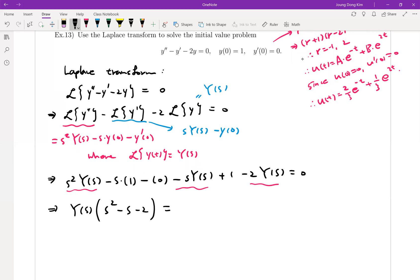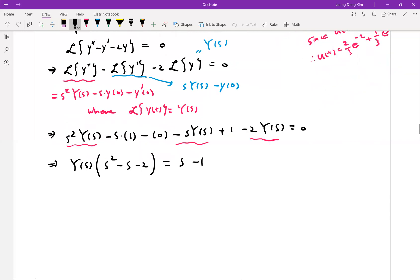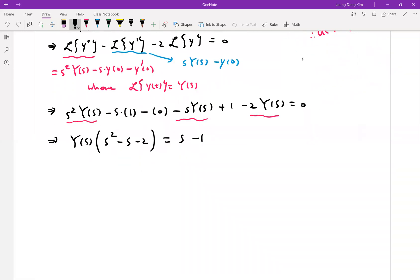Then y s and s squared minus s minus two. And then move everything to the right hand side. It is equal to minus s which is plus now, and minus one. Then let me divide by the coefficient of y s.